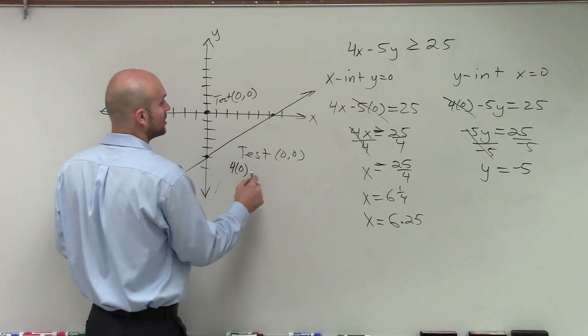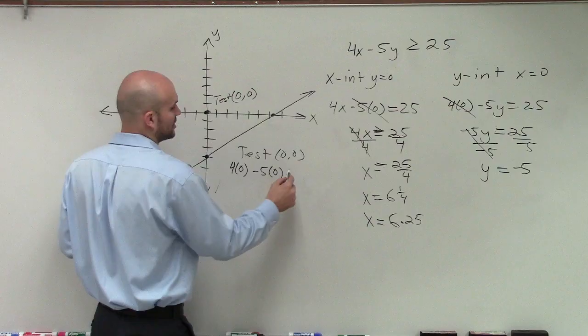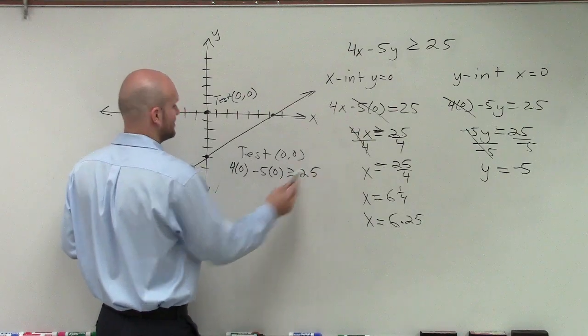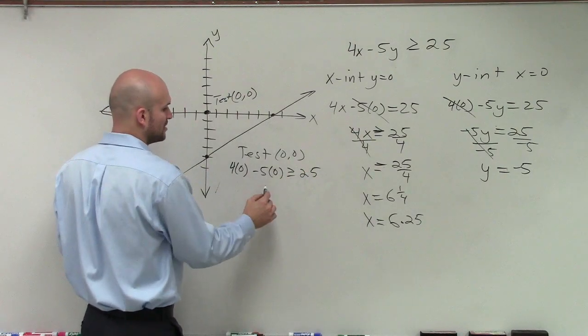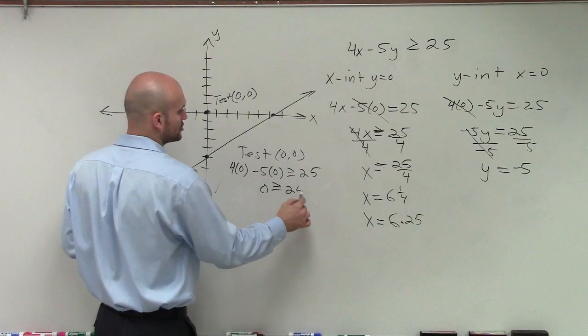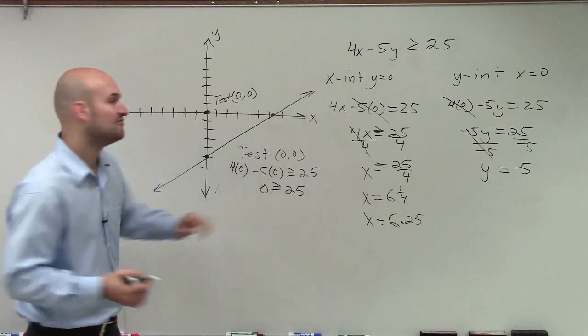So test 0, 0. We have 4 times 0 minus 5 times 0 is greater than or equal to 25. Well, this all becomes 0 is greater than or equal to 25. And that is false.